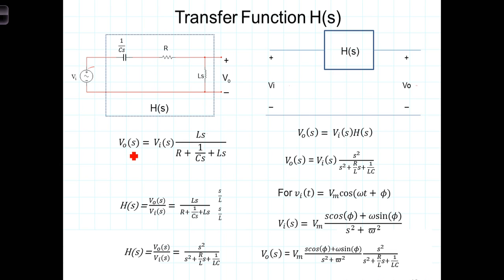We can then say that V out of S is equal to V in of S times L times S divided by the sum of the three impedances. Now we define the transfer function. We're going to define the transfer function as the ratio of the output as a function of S divided by the input as a function of S.